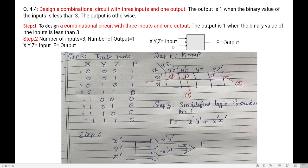I am drawing a block diagram with three inputs X, Y, Z and output F. Step 3 is to draw the truth table. With 3 inputs X, Y, Z, and output F, there are 8 combinations — from 000 to 111.